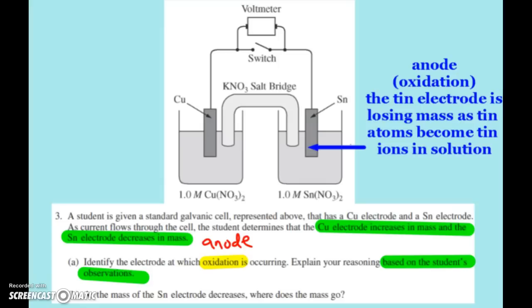And then part b, as it says, where does the mass go? As the tin electrode is losing mass, as tin atoms become tin ions in solution. Alright, another thing to note that we'll need a little later, notice the solutions that we're working with, copper nitrate and tin nitrate, and they're both two nitrates. So we know that we have copper plus two ions in here, and tin plus two ions in here.